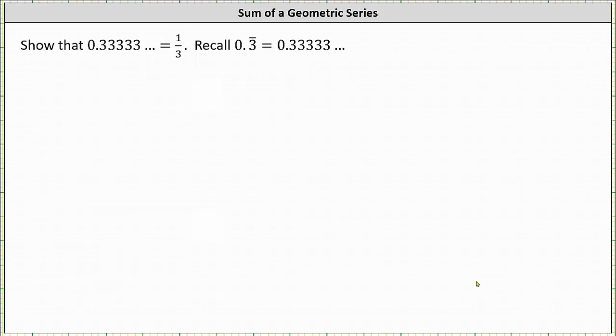We want to show that 0.3 repeating equals 1 third. Recall another way to express 0.3 repeating is 0.3 with a bar over the three. We begin by writing 0.3 repeating as an infinite sum. 0.3 repeating equals 0.3 plus 0.03 plus 0.003 and so on.